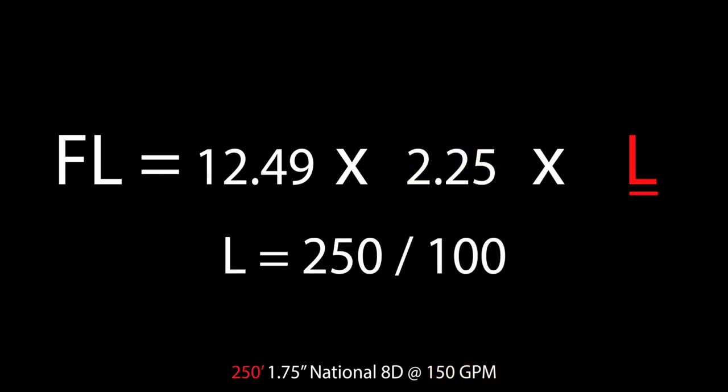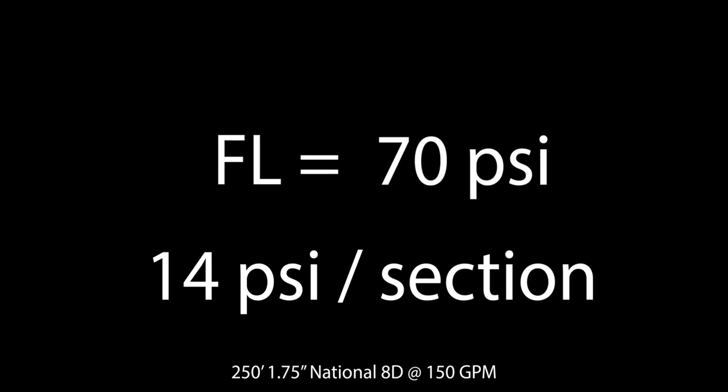Finally, L is our length, 250 feet divided by 100, which equals 2.5. After multiplying these numbers, we obtain a friction loss of 70 PSI, or 14 PSI per section of hose.